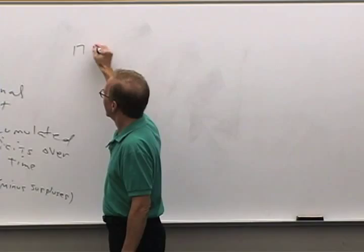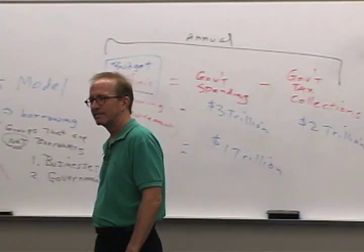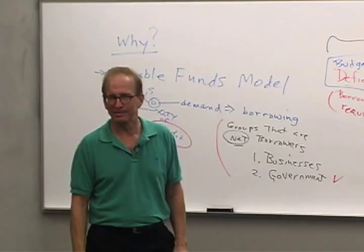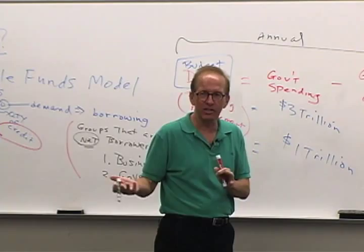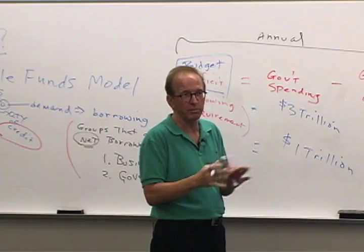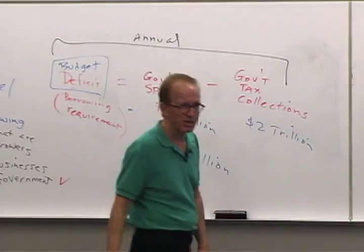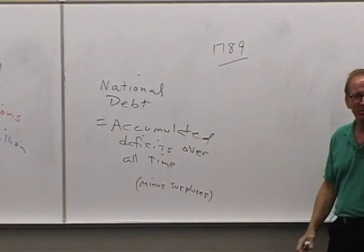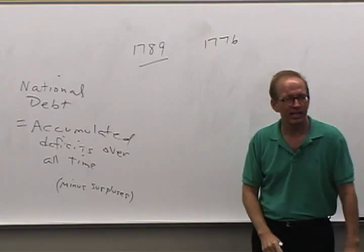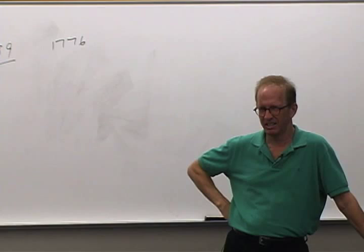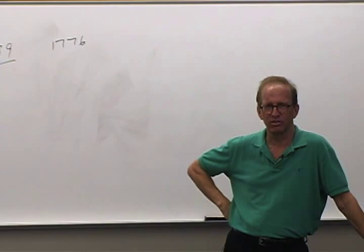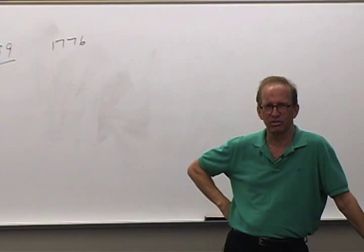When did the national debt start? What happened in 1789? That is when the United States was created. Before that there were the English colonies. Those thirteen colonies became independent, formed a confederation, then came together under the U.S. Constitution in 1789. The war ended in 1783, and the Constitution was ratified in 1789 — that's when the United States had a going enterprise and the national debt began.